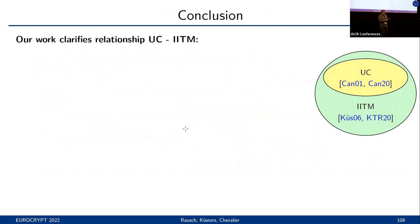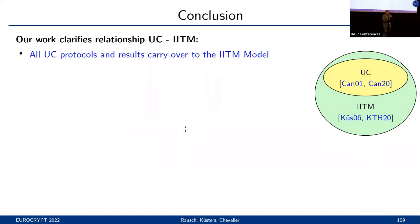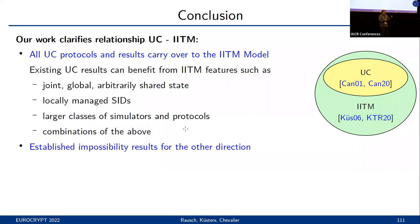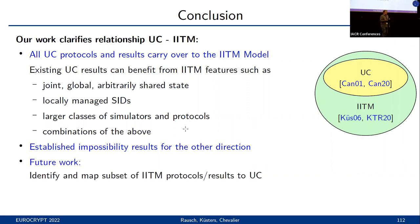To summarize and conclude: our work is the first that clarifies the relationship of the UC and the IITM models. On one hand, we show that all UC protocols and security results carry over to the IITM model, meaning existing UC results can now be combined with all of the aforementioned IITM features such as joint, global, and arbitrarily shared state, locally managed session IDs, larger classes of protocols and simulators, and combinations of the above. On the other hand, we establish that several gaps make a full embedding of the IITM model into the UC model impossible in general, and leave it as interesting future work to identify and map a subset of the IITM model and security results that still carry over to the UC setting. With that, I conclude my talk and want to thank you very much for your attention.